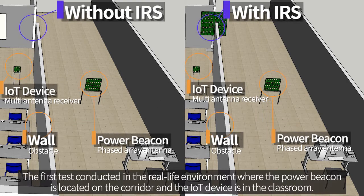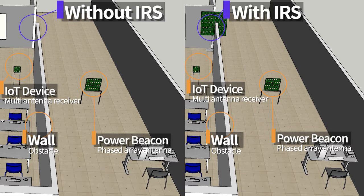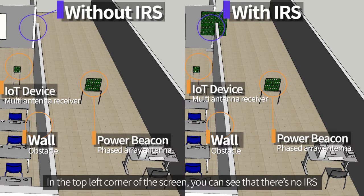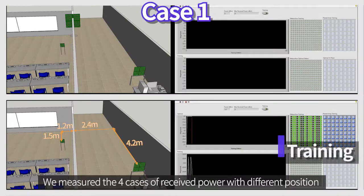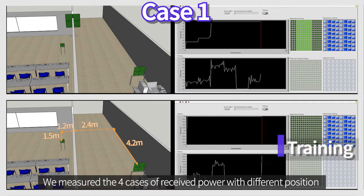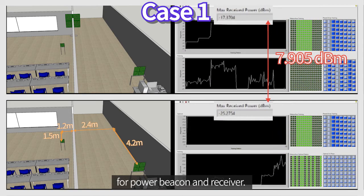The first test was conducted in a real-life environment where the power beacon is located in a corridor and the IRS and IoT device are in a classroom. This setup is for comparing the received power with and without the proposed IRS. In the top left corner of the screen, you can see the case without IRS, and we measured four cases of received power at different positions for the power beacon and receiver.